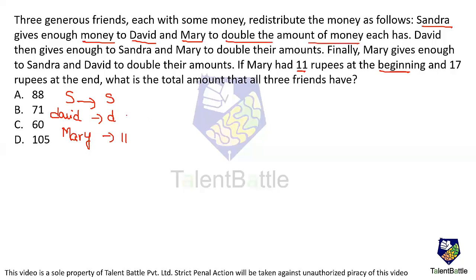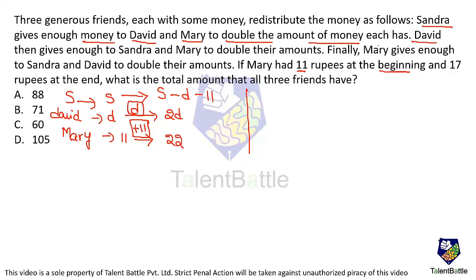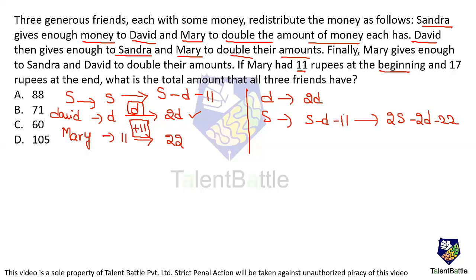Let Sandra's amount = s, David's amount = d, and Mary's amount = 11. After Sandra's redistribution: Sandra gives d rupees to David (doubling d to 2d) and 11 rupees to Mary (doubling 11 to 22). So Sandra now has s − d − 11. David has 2d. Mary has 22.